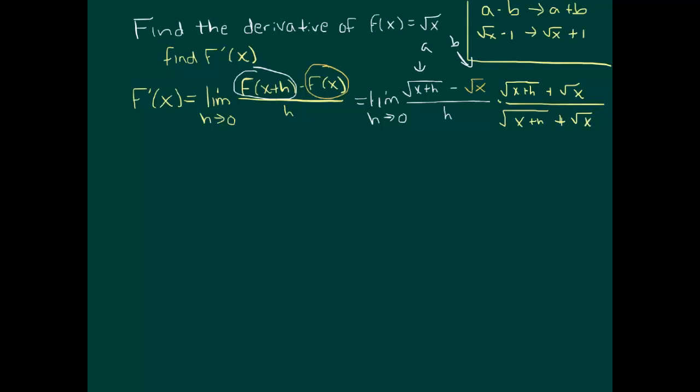And then of course doing it to the bottom as well because you can't just multiply an expression because you'd be changing it. But if we multiply the top and the bottom by the same thing, then we're multiplying by 1.